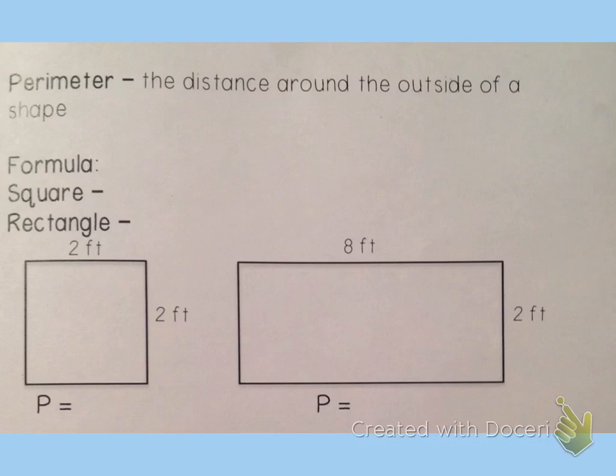Perimeter is the distance around the outside of a shape. When we find the perimeter of a figure, we add the lengths of all the sides, and it's important that we add up all the sides and not just some of them.